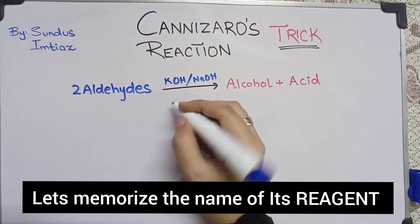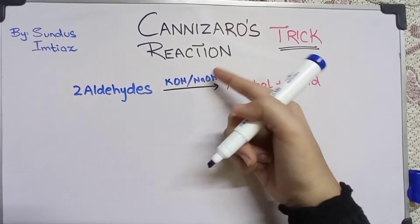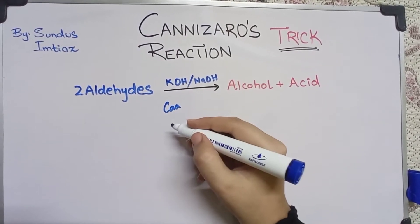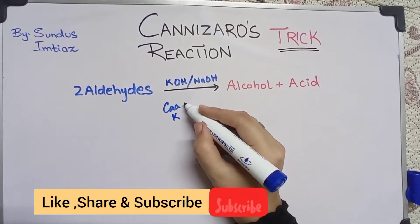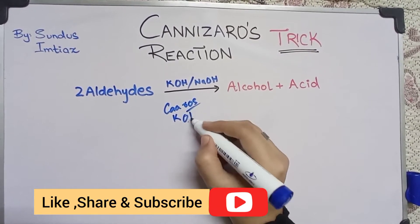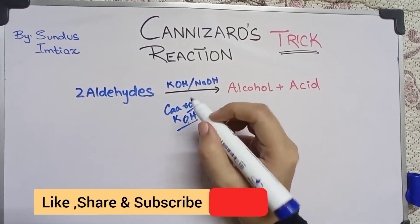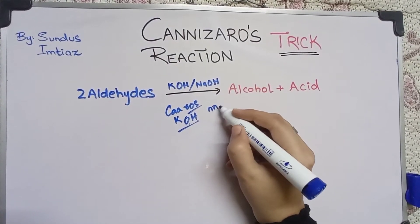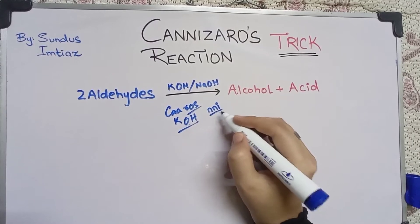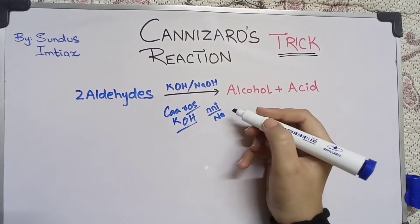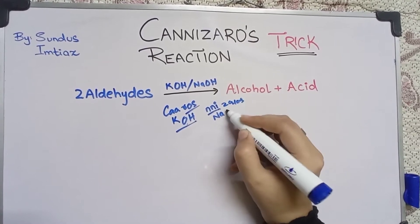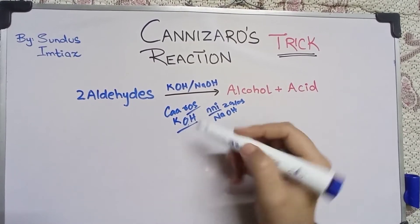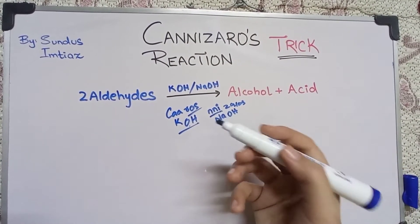To remember these reagents: the word 'Cannizzaro' itself contains a 'K' sound, and the 'zzaro' sounds like 'zeros' which means OH — so KOH is the reagent. For NaOH, 'Kenny' contains 'Na' which sounds like Na, and again the 'zeros' gives OH. So the reagents used in Cannizzaro's reaction are KOH or NaOH.